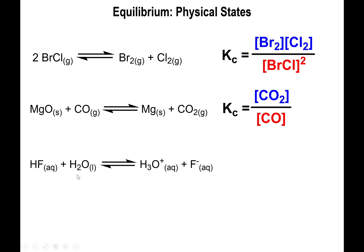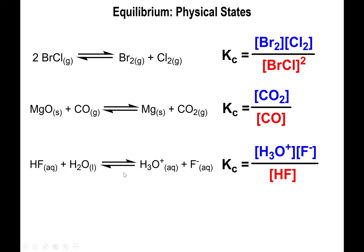Next: HF(aq) + H₂O → H₃O⁺ + F⁻. This is the dissolution of hydrofluoric acid in water — a conjugate acid-base reaction. Everything is aq except water, so water is the one thing you exclude. The expression is [H₃O⁺][F⁻] / [HF], with water excluded because its concentration is assumed constant.